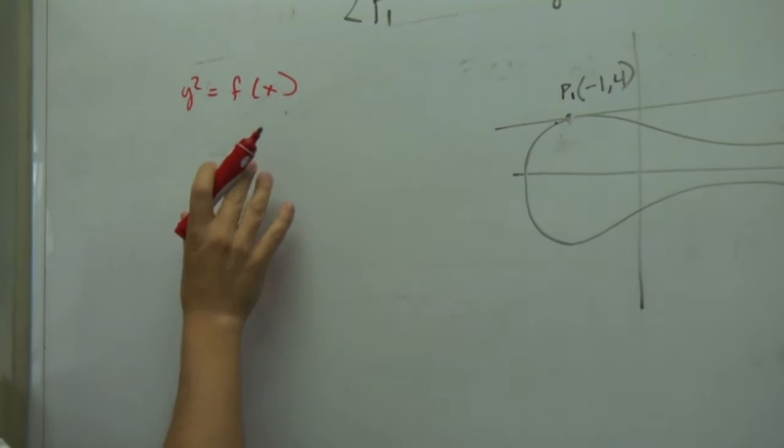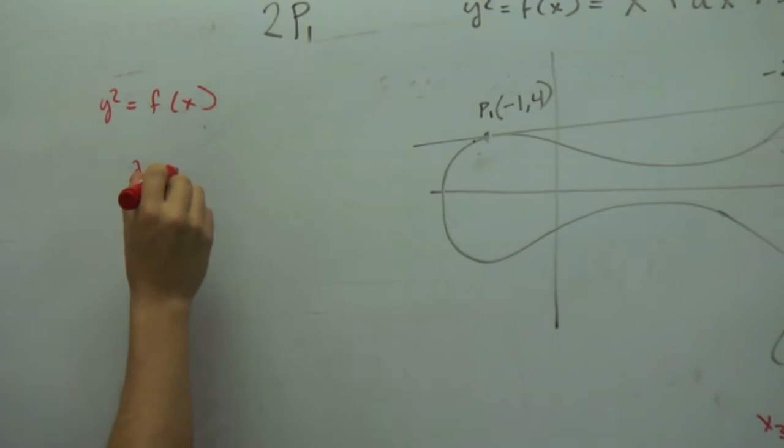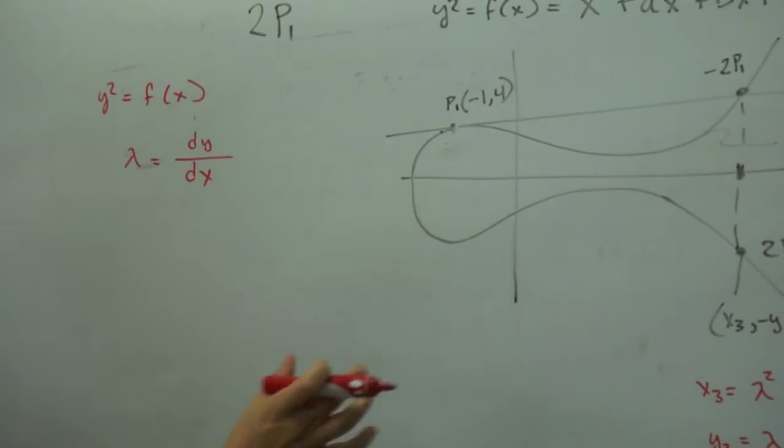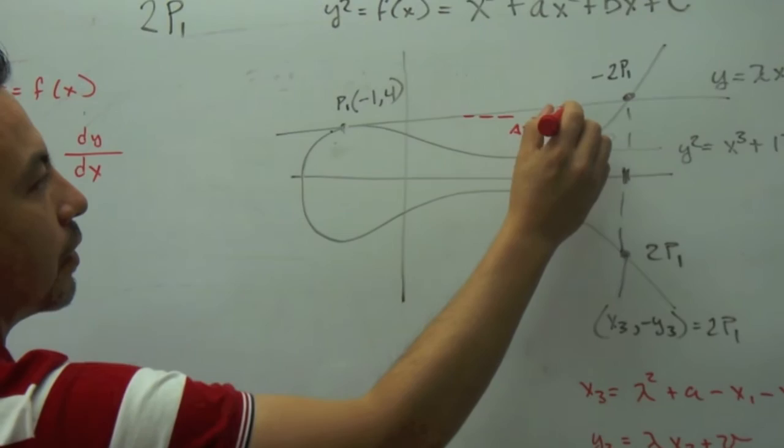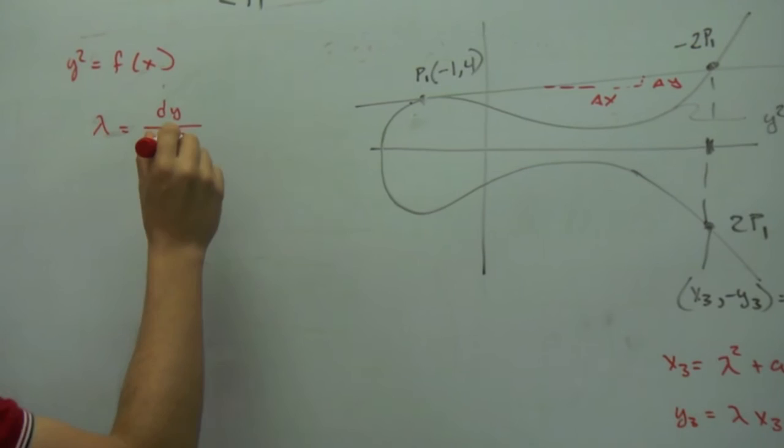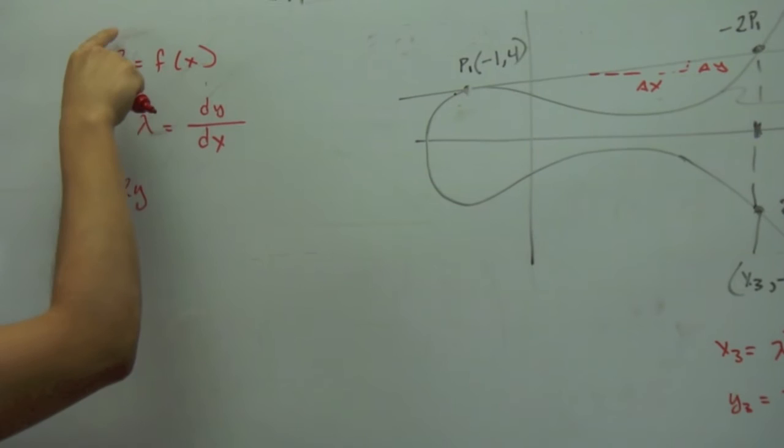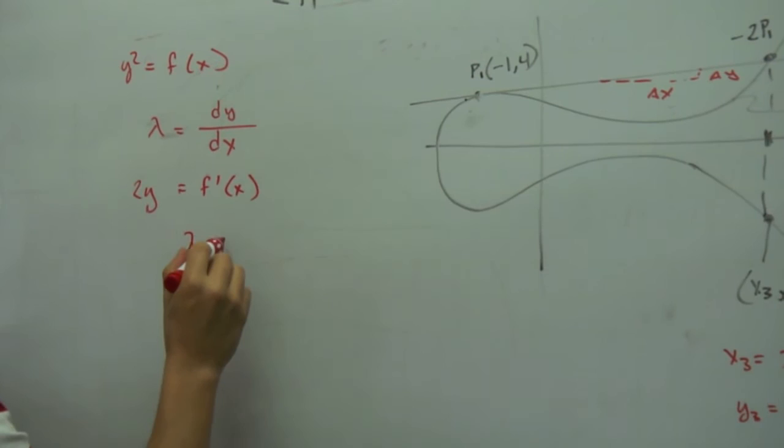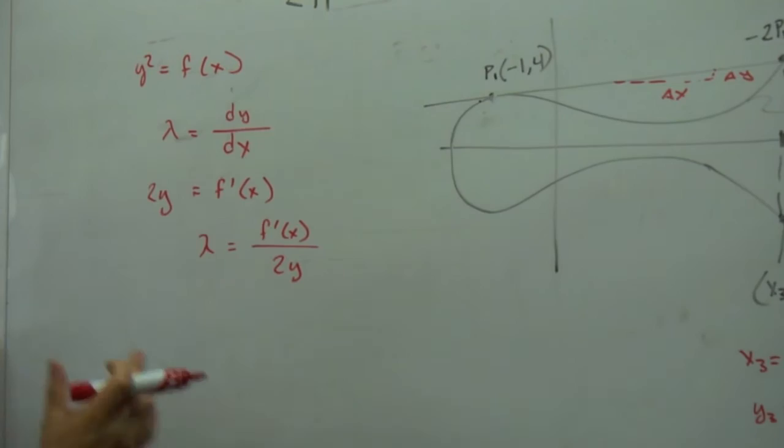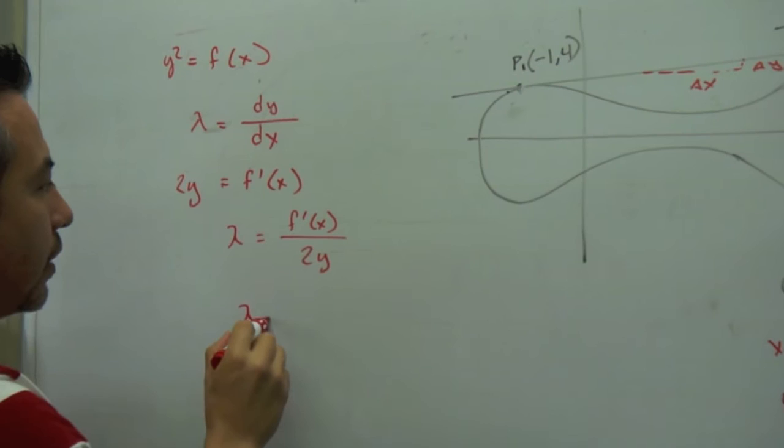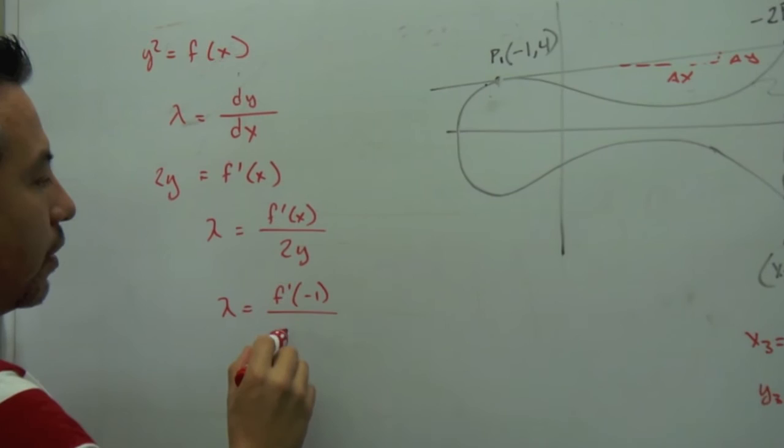So I'm going to do the definition. The definition says y squared equals f of x. So if I do implicit differentiation, this is the rate of change dy/dx, because it's the rate of change of delta x over delta y, that's the slope by definition. So this is 2y, so I'm differentiating implicitly this part and this side. This is f prime of x. So then alpha equals f prime of x over 2y.